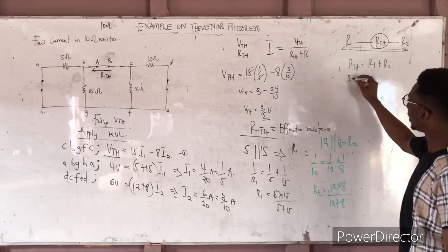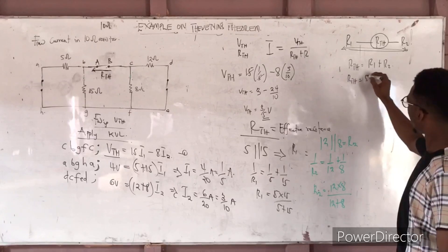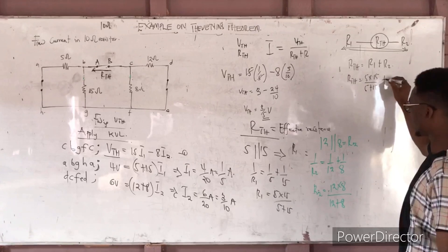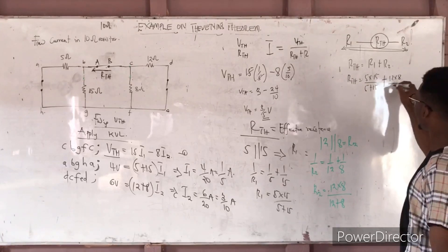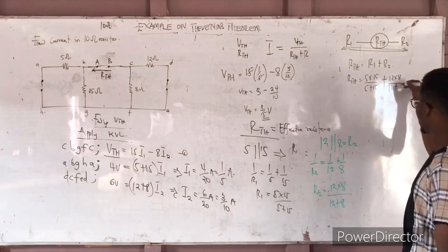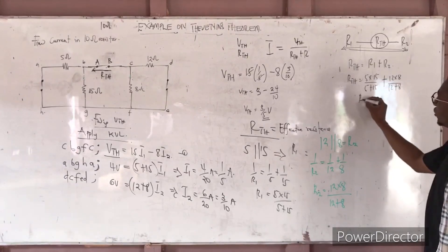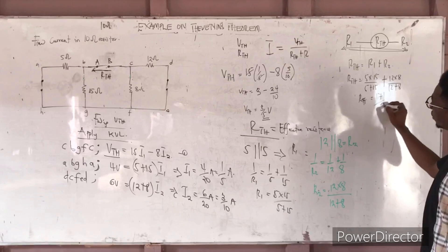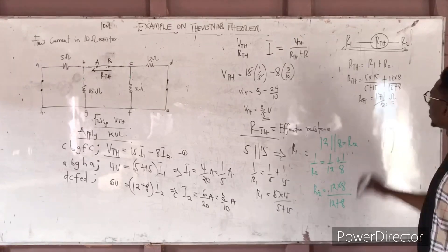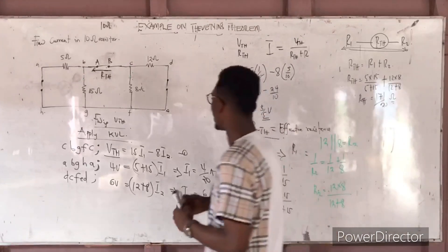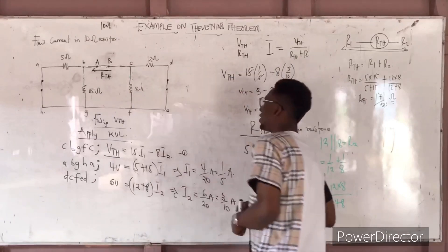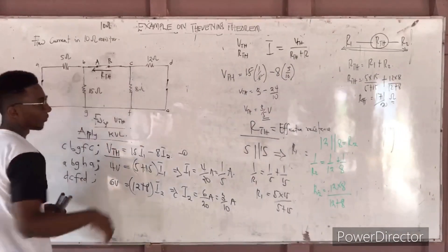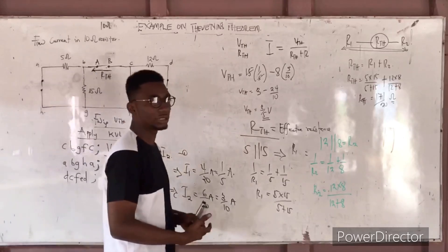Therefore, RTH = R1 + R2 = (5 × 15)/(5 + 15) + (12 × 8)/(12 + 8). When you do this calculation, you get RTH = 171/20 ohms.